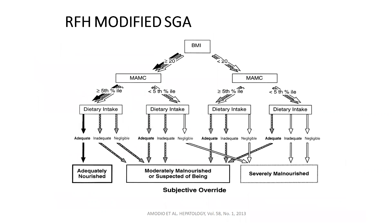The SGA was modified by the Royal Free Hospital. In this modified version, BMI is first calculated. If BMI is greater than 20 and mid-arm muscle circumference is above the fifth percentile and dietary intake is adequate, the patient is adequately nourished. However, if mid-arm muscle circumference is below the fifth percentile for age and sex and dietary intake is also poor, the patient is moderately or severely malnourished. If BMI is less than 20 and mid-arm muscle circumference is also below the fifth percentile, the patient directly goes into the severely malnourished group and requires particular nutritional care.